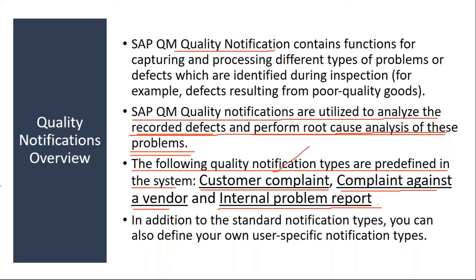One is customer complaint, which comes from SD. Complaint against vendor is in MM — you purchase material from the supplier, you inspect it, and if there is a problem, then you raise a notification. Another one is an internal problem report, which is a production notification. Your company produces a semi-finished or finished product, you inspect it, there is some issue, and you raise an internal problem report.